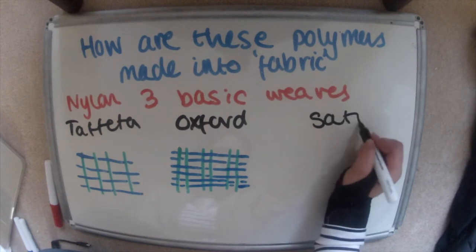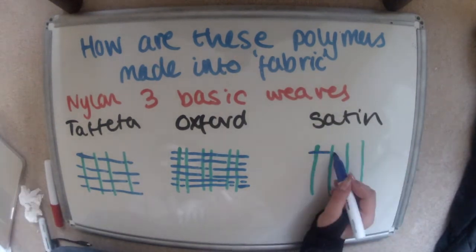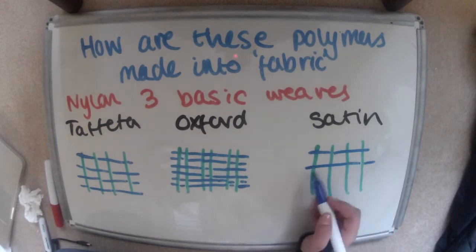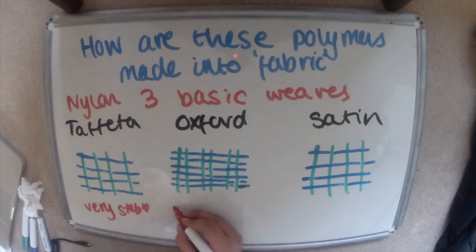And then the final one is the satin weave which is a lot more complex. It goes like over three, under one, over two type. So it's very very strong, it's your basic weave and it's very stable. Oxford is a much rougher finish and satin is a very lustrous finish.